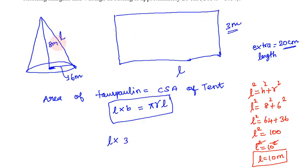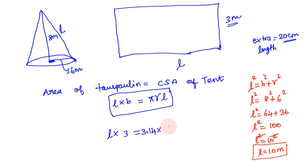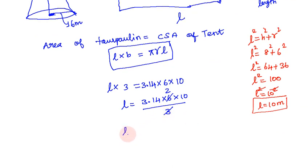L into 3 equals 3.14 times 6 times 10. L equals 3.14 times 6 times 10 divided by 3. Multiply: 2 times 4 is 8, 1, 2 is 2, 3, 2 times 6 is 12. Moving 2 digits after the decimal point gives 6.28. Then 6.28 times 10. Multiplying by 10, we move 1 digit to the right, so length equals 62.8 meters.